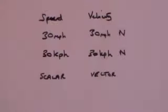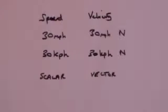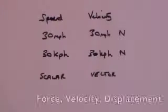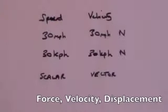Examples of scalars would be temperature, energy, or mass — none of these things have directions. Whereas vectors would be things like forces: if you have a force, it pushes in a particular direction. Or velocity, as we've seen. Or even a thing called displacement — in other words, a distance, but a distance in a particular direction. All of these are vectors.